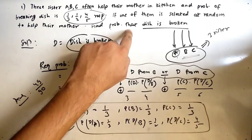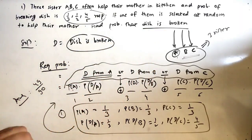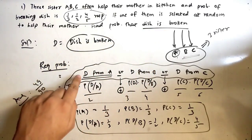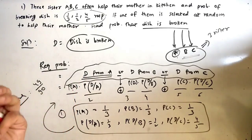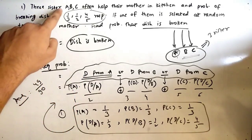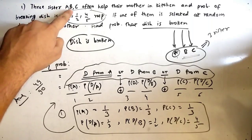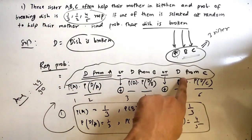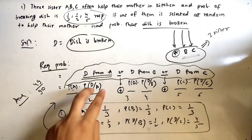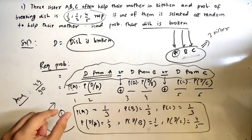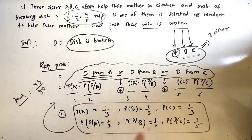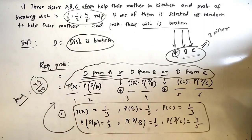To recap: the required probability is that the dish is broken, but there are three conditions — A can break it, B can break it, or C can break it. We convert this to mathematical terms, find the six values, plug them in, and get the answer 49/90. Now let's look at some more interesting and important examples.